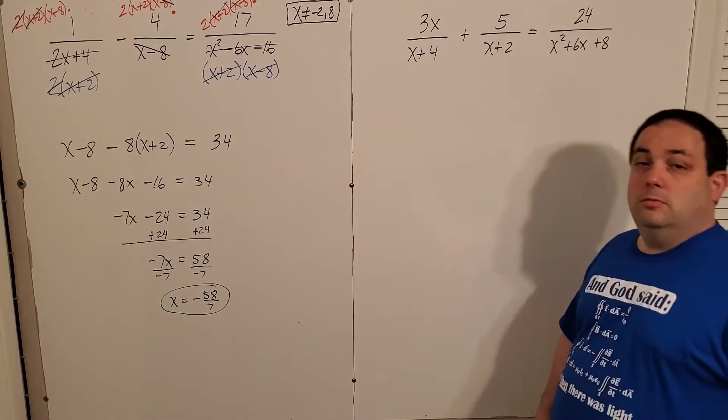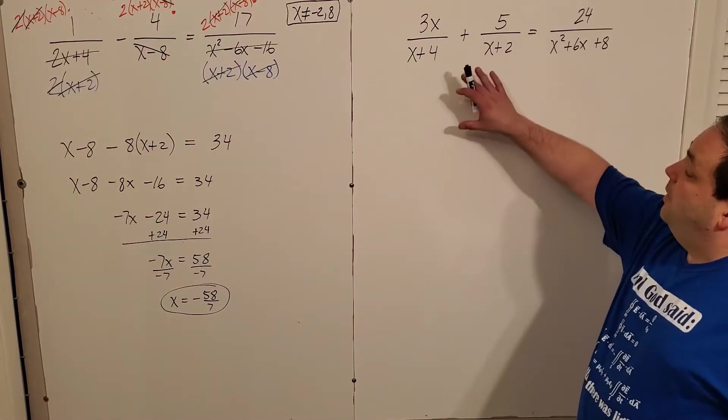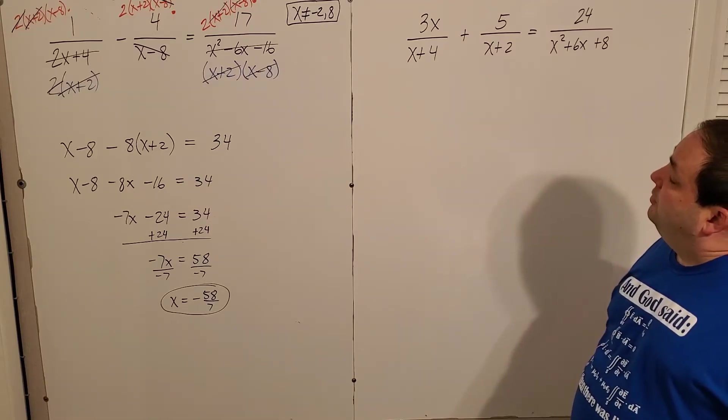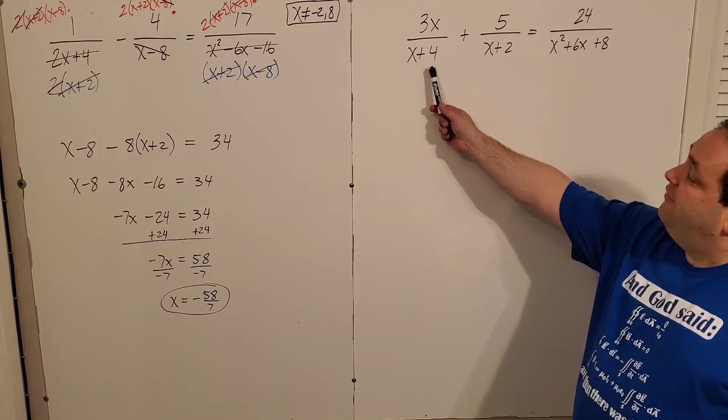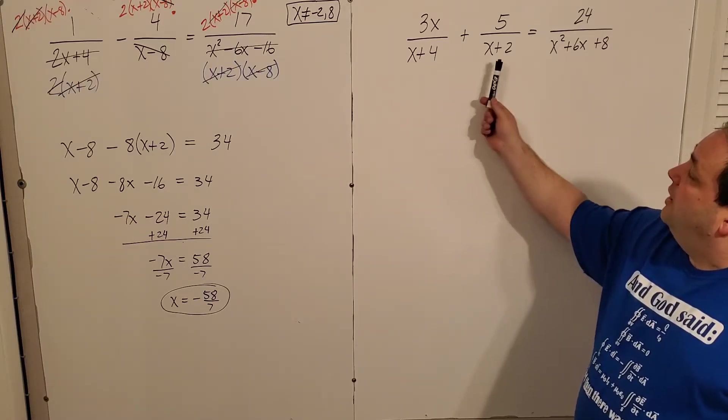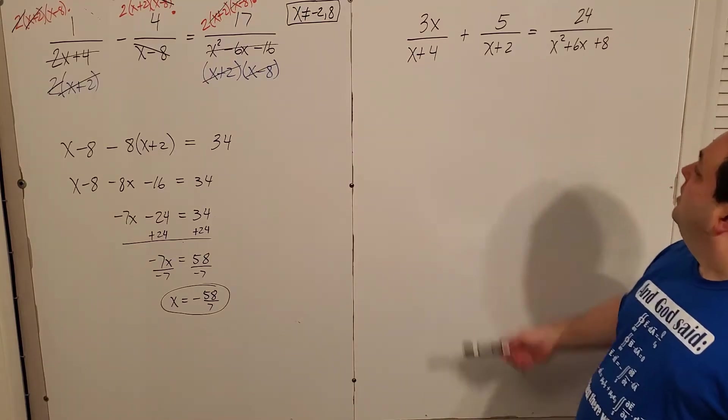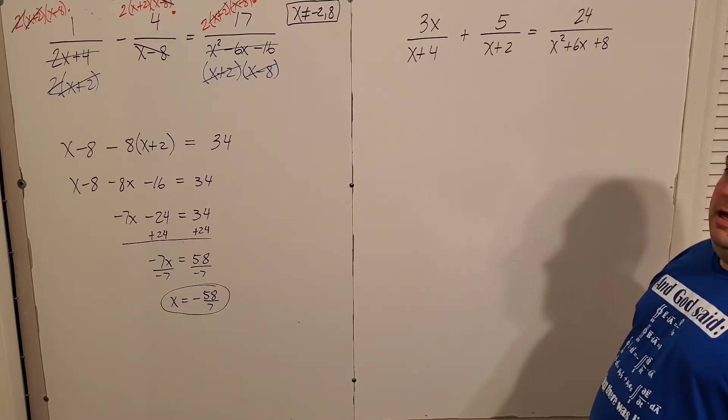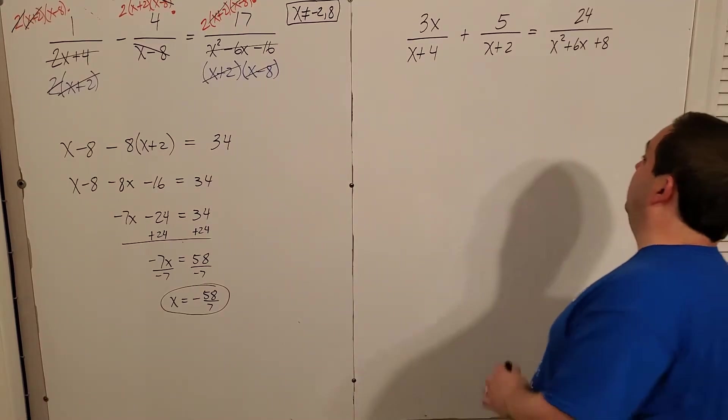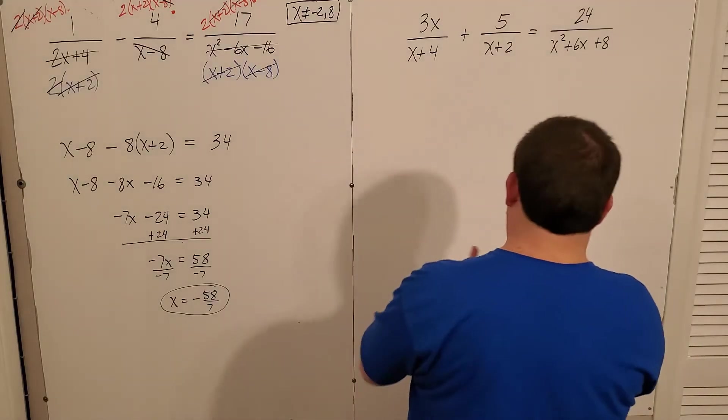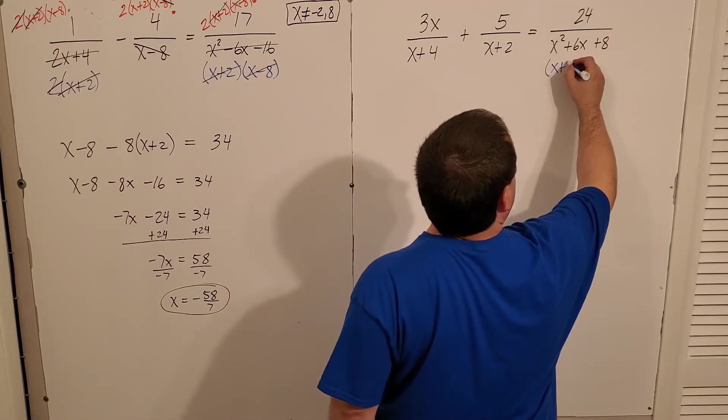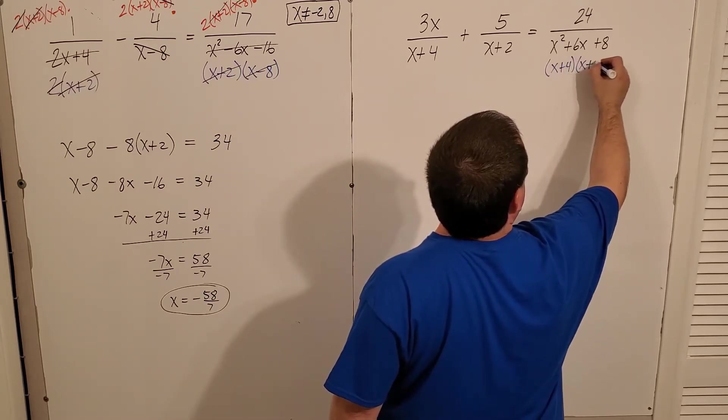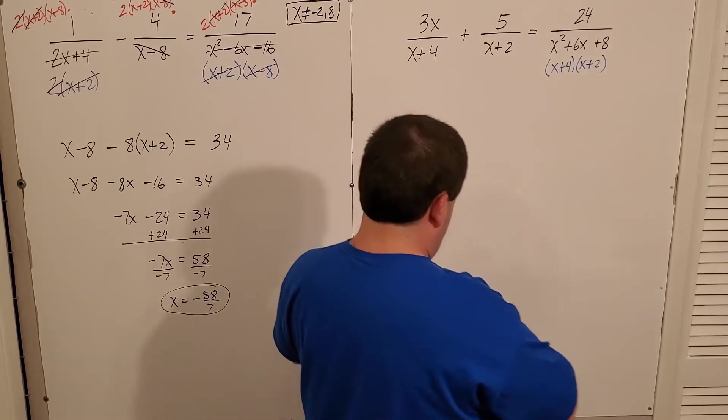So one more example right here. I want to approach this the same way. I want to look at my denominators and make sure I don't have any factoring to do. x plus four, x plus two, all good. x squared plus six x plus eight, that can be factored. So let's do that. I'm going to factor that into x plus four, x plus two. So that means this piece is technically no longer needed because that became this.